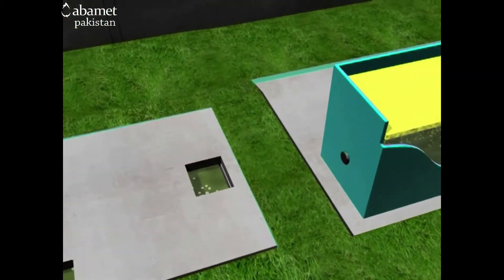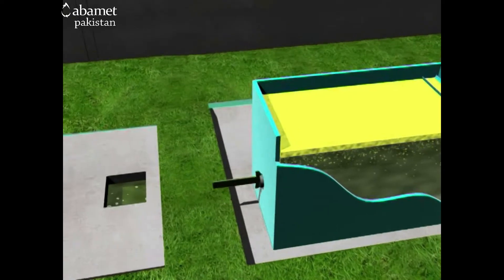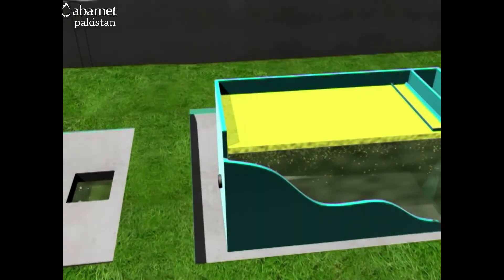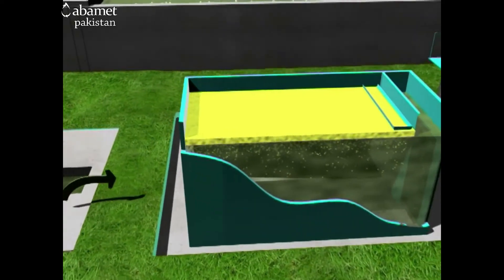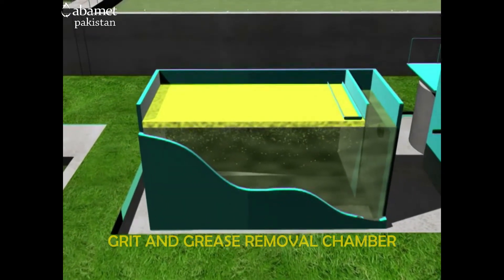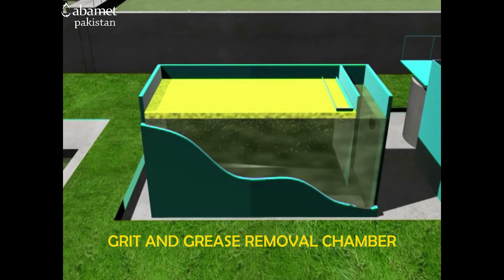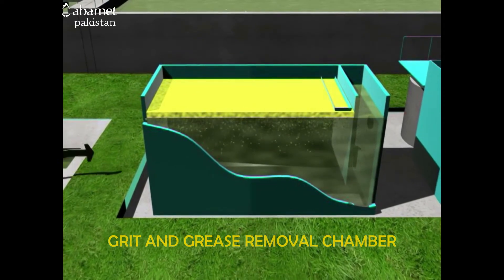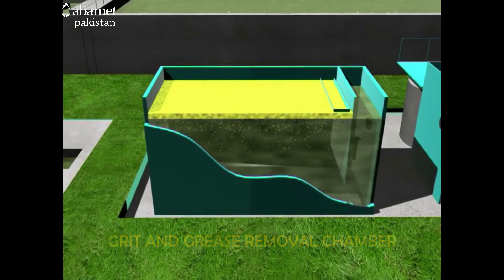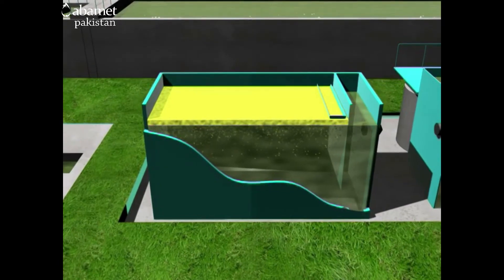Then comes the grit and grease chamber. Heavy solid waste and very light particles, along with oil and grease, are stopped in the grit and grease chamber. It separates the solid from the liquid.